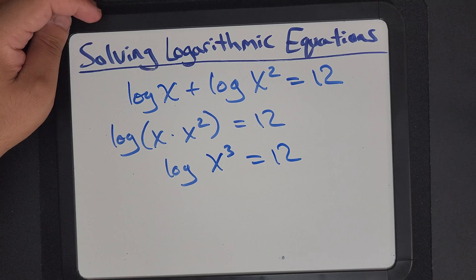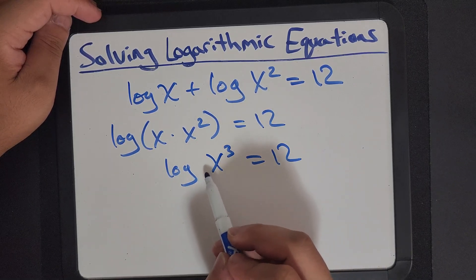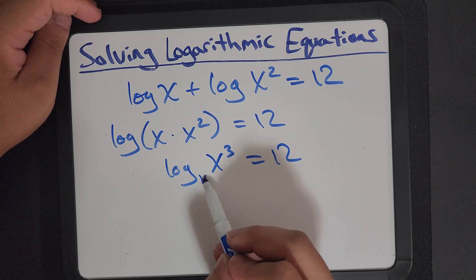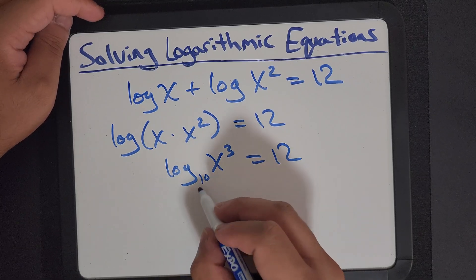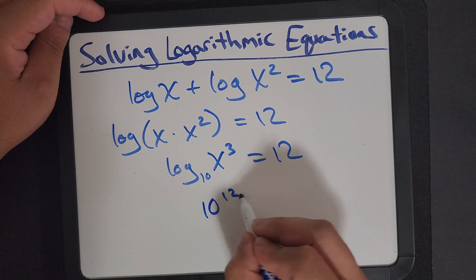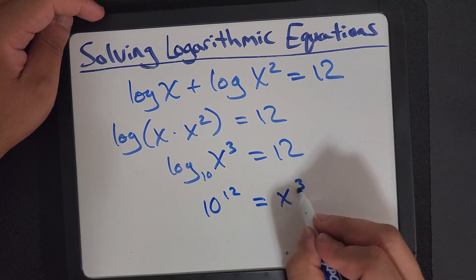As you can see, I haven't written a base here, which means by default it's 10. So let's rewrite this as 10 to the power of 12 equals to x cubed.